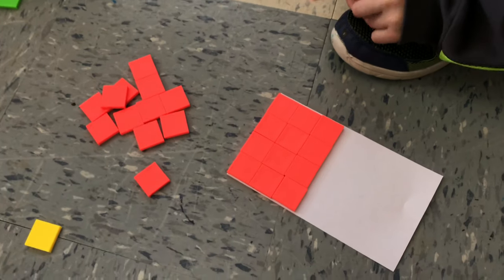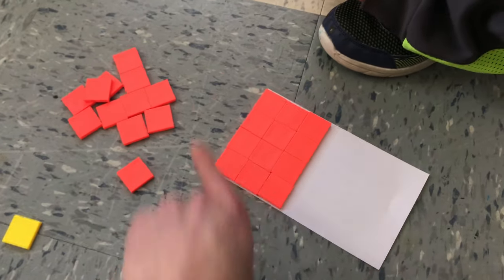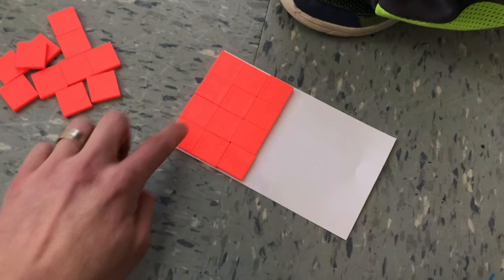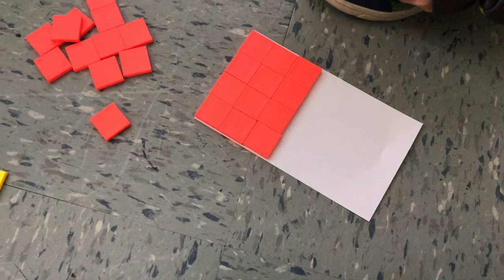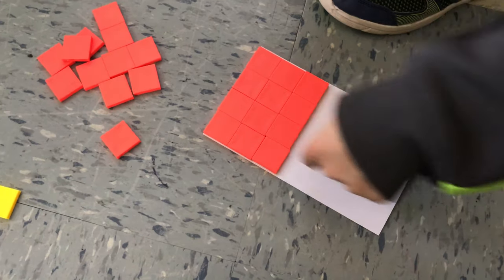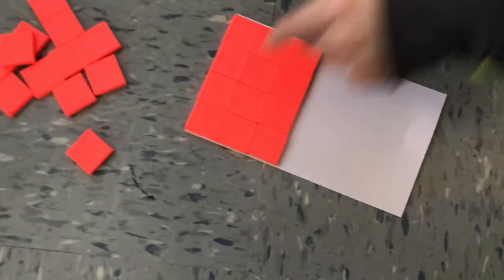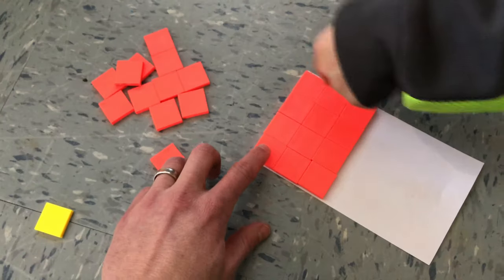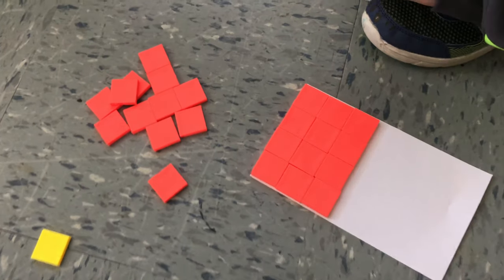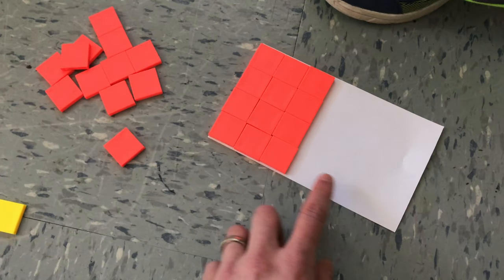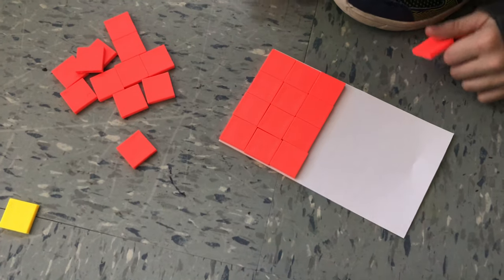So you're trying to find out how many in total, how many rows? If this is one row, how many rows do you have? You got, what did you say, three rows? Look at that - one row, two rows, three rows. I wonder how many more rows do you think you're gonna need to fill this up?